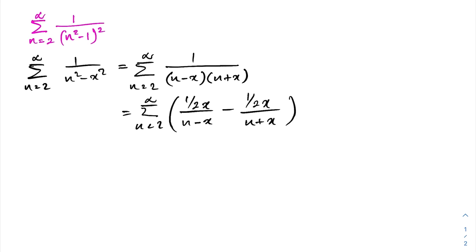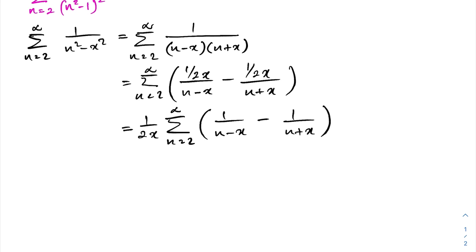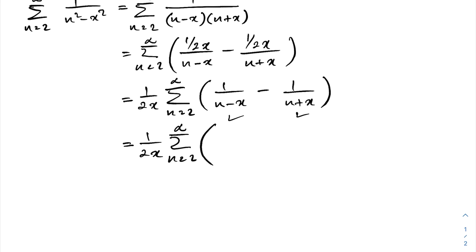We can take 1 over 2x outside of the sigma notation. So we have 1 over 2x times the sum from n=2 to infinity of 1/(n minus x) minus 1/(n plus x). Now 1/(n minus x) and 1/(n plus x) can each be represented as a definite integral: 1/(n minus x) equals the integral from 0 to 1 of t^(n minus x minus 1) dt.